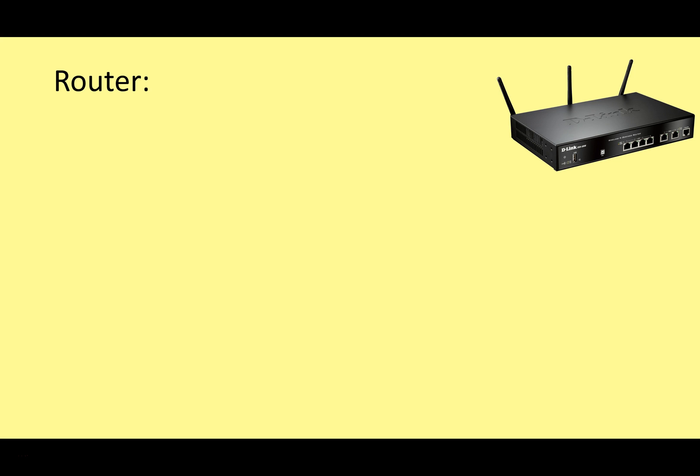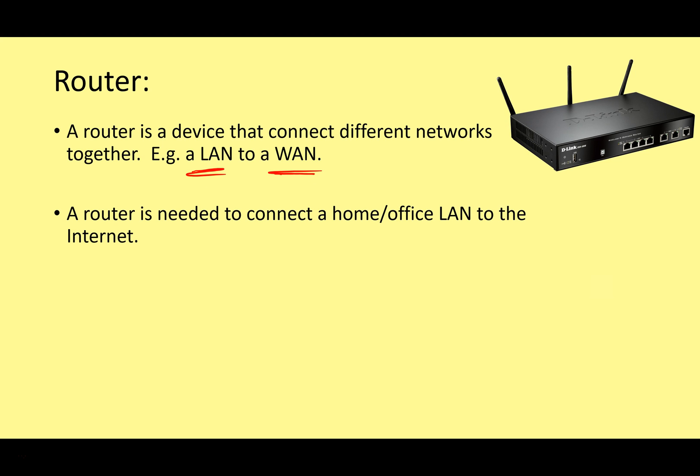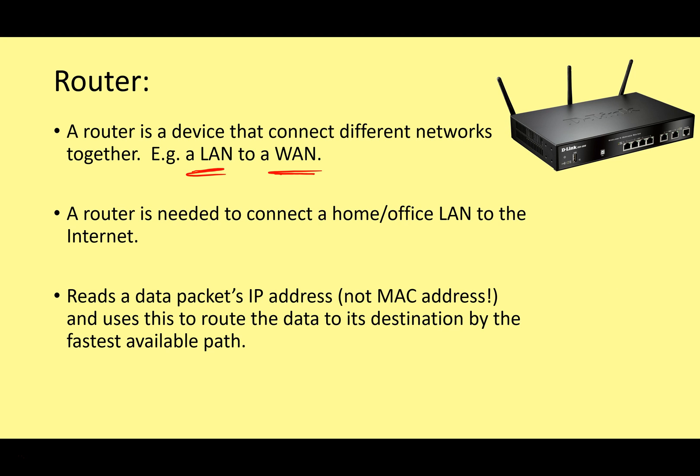Here's another box - the router. These all look very similar. A router is a device that connects different networks together; for example, it might connect a LAN to a wide area network. You need a router to connect your home or office local area network to the internet. Unlike a hub or switch, which connect computers on a local area network, a router connects one network to another - typically a local area network to a wide area network. Routers read a data packet's IP address, not the MAC address, and use this to route data to its destination by the fastest available path.